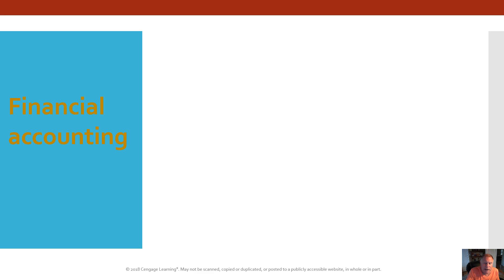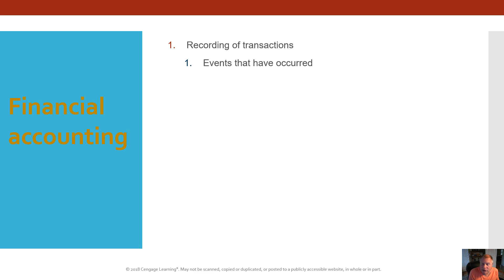Financial accounting is about recording transactions — events that have already occurred. This includes the processing of checks, the depositing of money, the purchase of supplies and materials needed for the cost of goods, capital expenditures such as equipment, and borrowings. So it's the process of recording transactions on events that have occurred.